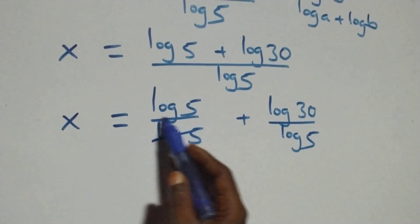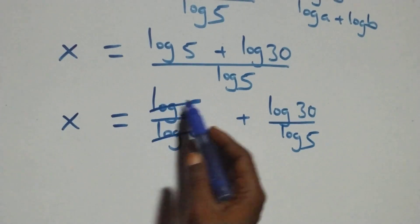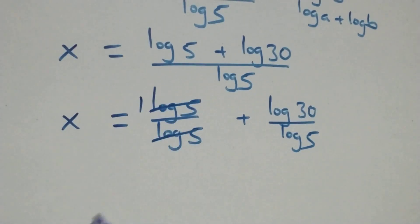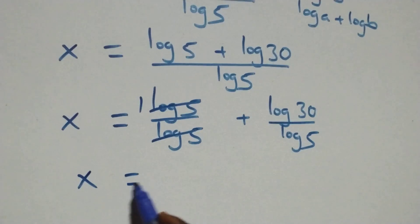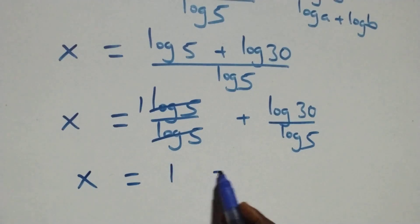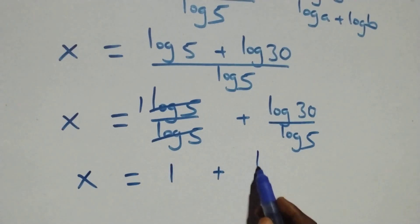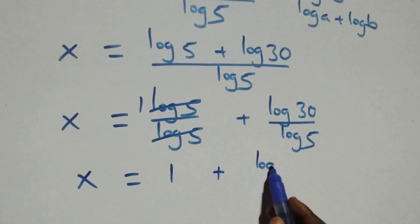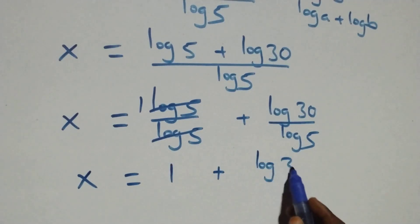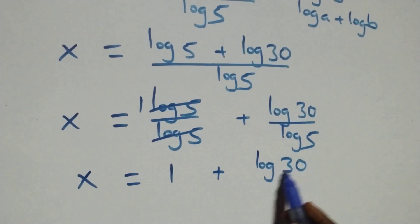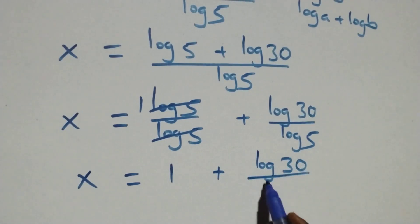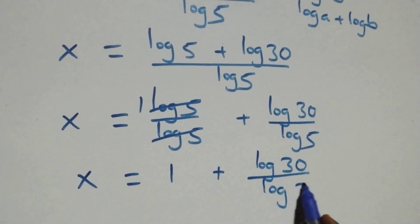Log 5 over log 5 cancels to 1, so we have x equals 1 plus log 30 over log 5.